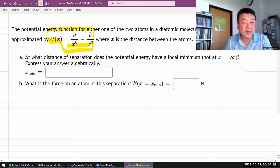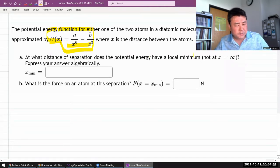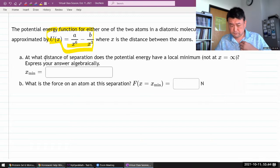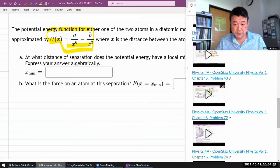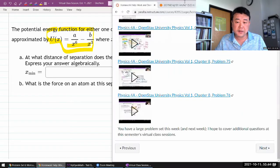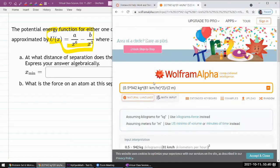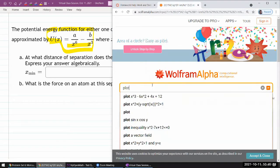And then it asks, at what distance of separation does the potential energy have a local minimum? And this is one of those things where it's good to have a good physical picture. And you can actually plot something like this. WolframAlpha actually does that. You can plot. It can handle symbolic values like a and b.